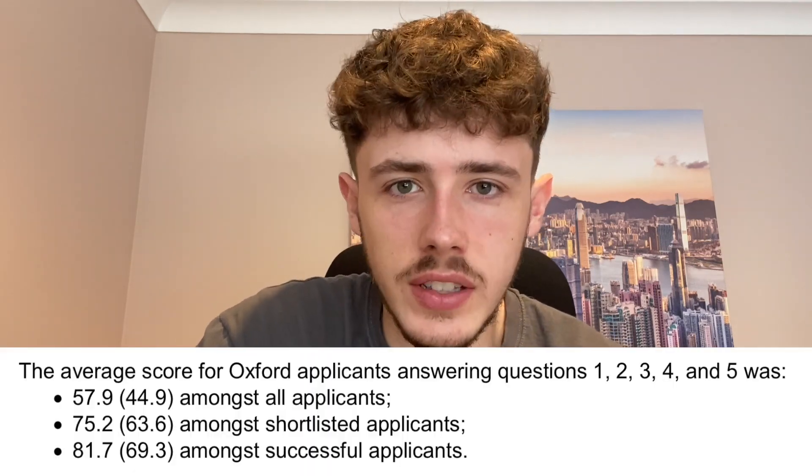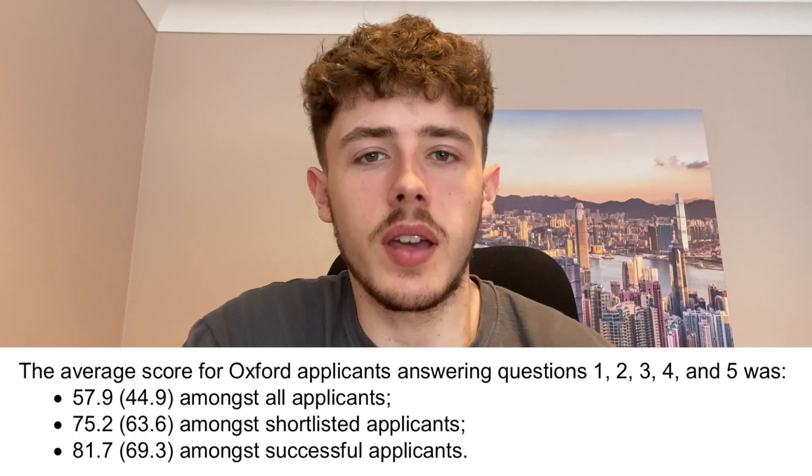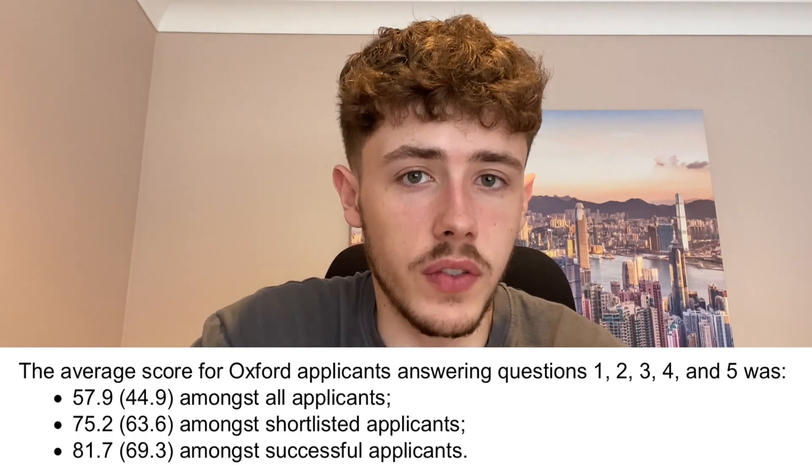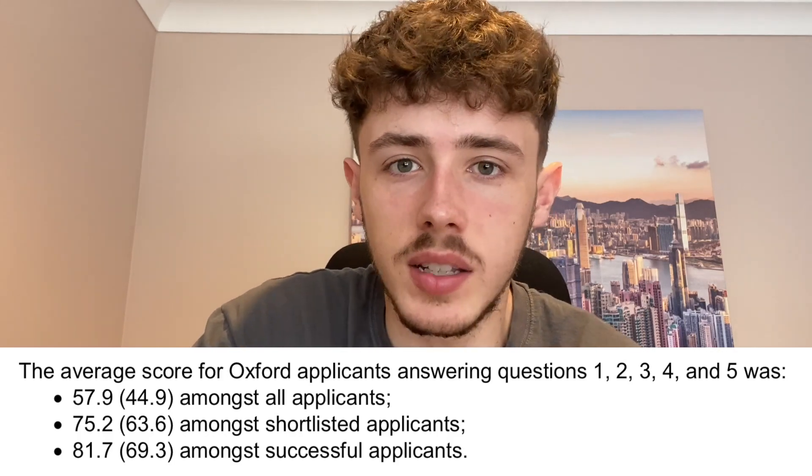After marking the first part, I was interested to see roughly what kind of percentage I need to somewhat be successful towards an Oxford application. And it was a lot higher than I was hoping for. It says the average score for people who got shortlisted onto like the next part of the application on average got 75.2. So that means in questions two, three, four and five, I need to get more towards the end of 80% to be considered on the shortlist. So let's hope the rest of the questions can go a little bit better than how question one went.